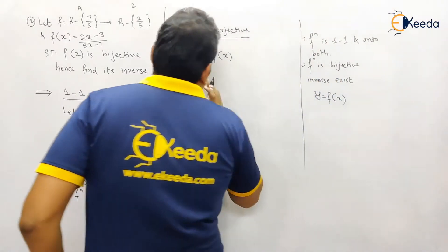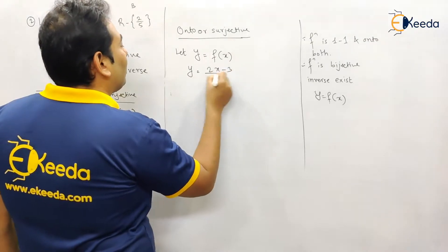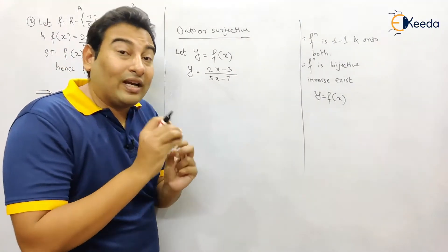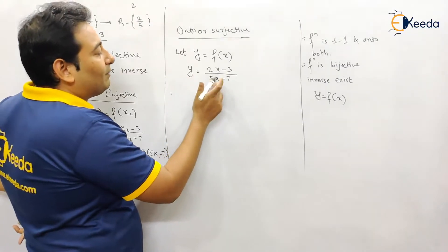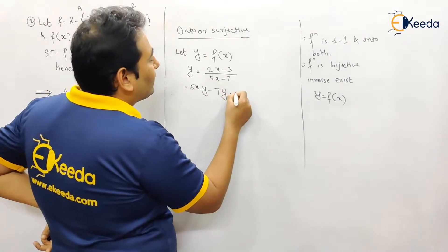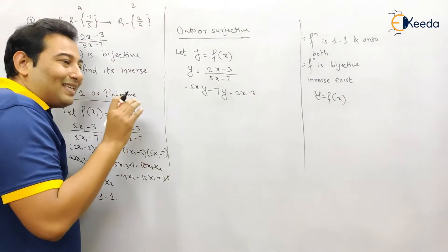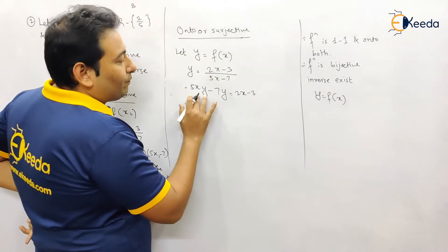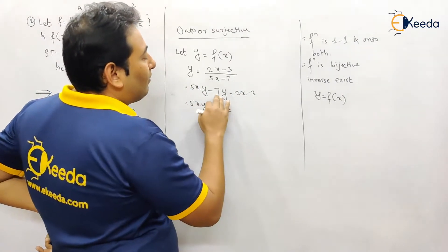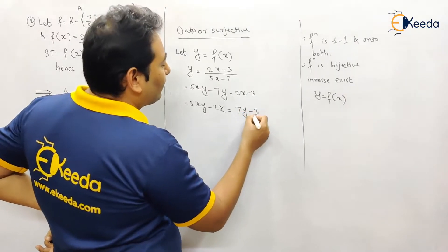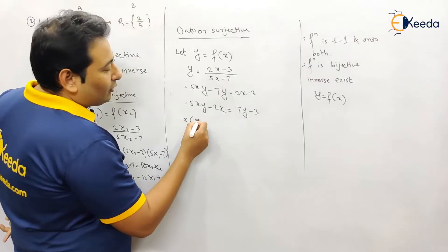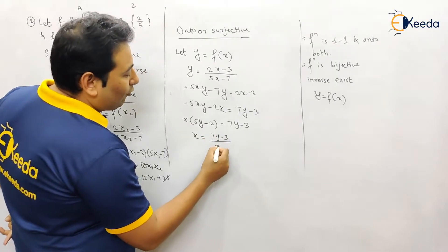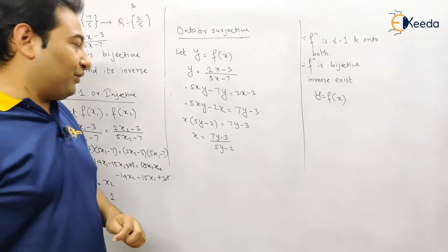Now we need to prove the function is onto. Let y = f(x) = (2x minus 3) / (5x minus 7). Our aim is to express x in terms of y. Cross multiplying: 5xy minus 7y = 2x minus 3. Keeping all x terms on the left: 5xy minus 2x = 7y minus 3. Taking x common: x(5y minus 2) = 7y minus 3, so x = (7y minus 3) / (5y minus 2).